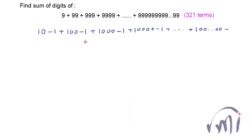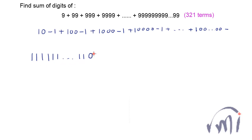Now I am going to add all the positive terms. When I add all the positive terms, I get a number which has a total of 321 ones. I cannot write it all out here, so I will write it symbolically — these are 321 ones followed by a 0. And from this we have to subtract a total of 321 ones.